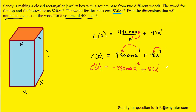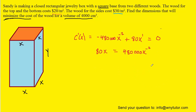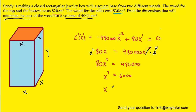After calculating the derivative, we set it equal to zero and solve for X. We add the first term to the right-hand side, then multiply both sides by X squared — X to the negative 2 times X squared becomes X to the zero, which is 1, so it cancels. The right side becomes 80X cubed. Dividing both sides by 80 gives X cubed equals 6000, and taking the cube root gives X approximately equal to 18.17 centimeters.